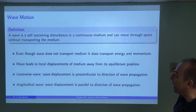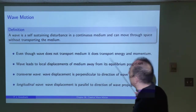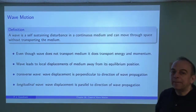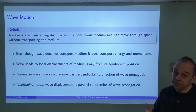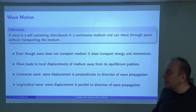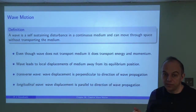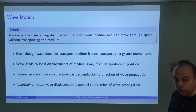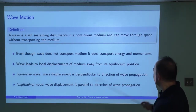So let's talk first about what we mean by a wave. A wave is a self-sustaining disturbance in a continuous medium that can move through space without transporting the medium. For example, a tsunami wave moving across the ocean carries a tremendous amount of energy and momentum, particularly if it hits the shore. As that tsunami moves across the ocean, the medium — the water — is only being displaced up and down; it's not being transported with the wave. The water undergoes a local displacement from some equilibrium position, but the water doesn't move with the wave as it goes across the ocean.